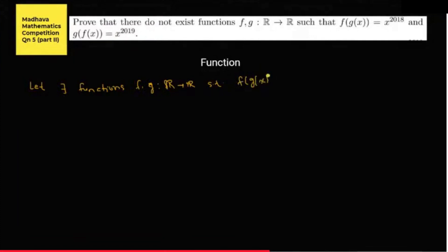Let's start. If possible, let there exist functions f and g which map from ℝ to ℝ such that f(g(x)) = x^2018 and g(f(x)) = x^2019 for all x.